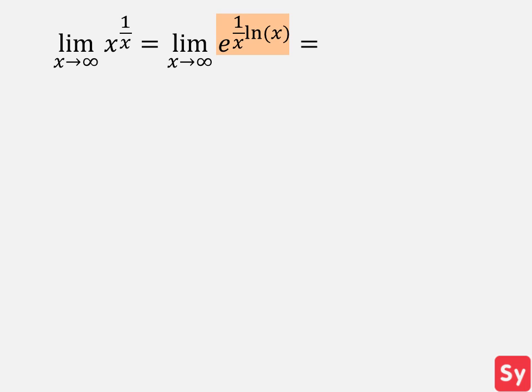We now have the limit of e to the 1 over x times ln of x as x approaches infinity. We'll first identify f of g of x and g of x. Now we'll find the limit b. We have the limit of 1 over x times ln of x as x approaches infinity. We'll simplify this to ln of x over x. We won't use the substitution method because if we use it, we'll get an indeterminate. So we'll use L'Hopital's rule.